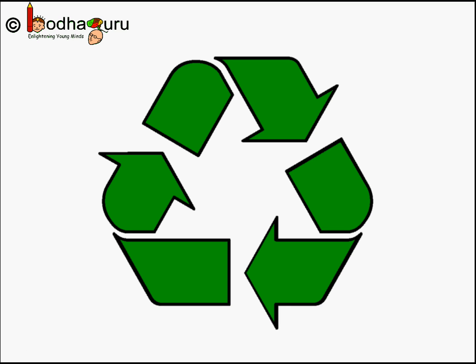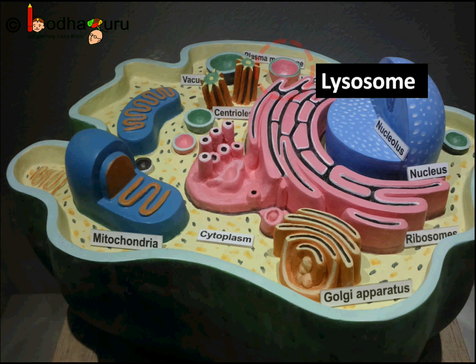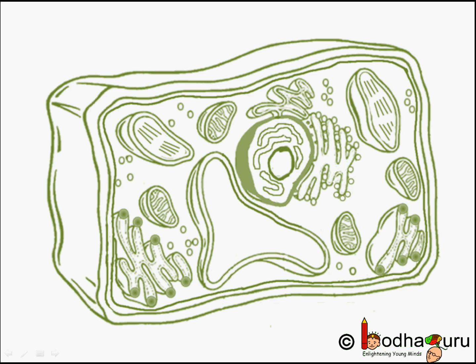We know that the cell organelle that acts as garbage disposal in animals is the lysosome. Plant cells don't have lysosomes. So which organelle acts as the garbage disposal system in plants?